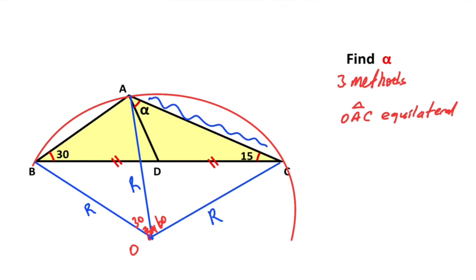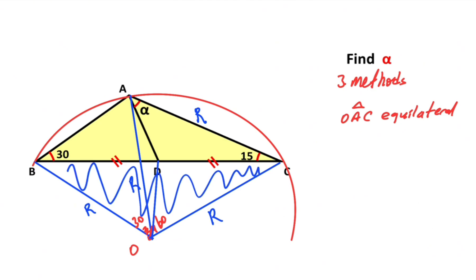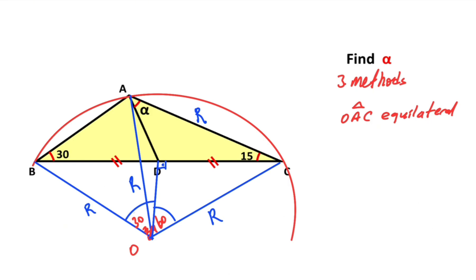Triangle OAC is an equilateral triangle, therefore this length must be equal to r units. If we connect these two points and focus on the triangle, the triangle is an isosceles triangle, so here must be equal to 90 degrees. Therefore these two angles must be equal to each other, so here must be equal to 45 degrees and 45 degrees left here.